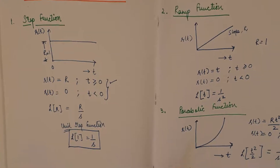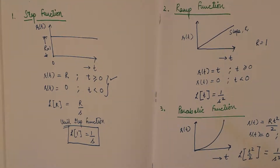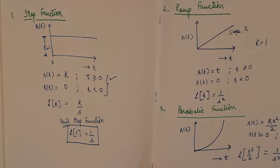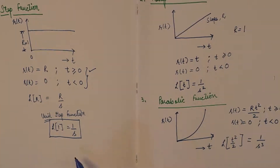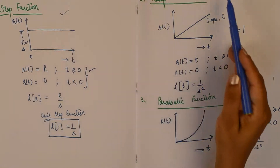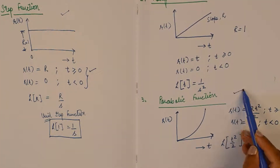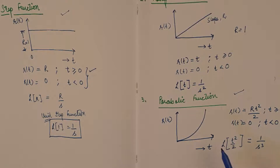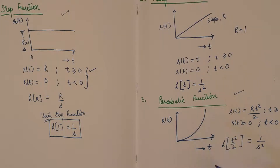What is the relation between the ramp and parabolic functions? The step function is the displacement function, the ramp is the velocity function, so the parabolic function comes out to be the acceleration function. Taking the time derivative of the ramp function gives the parabolic function — the same relationship that exists between displacement, velocity, and acceleration.